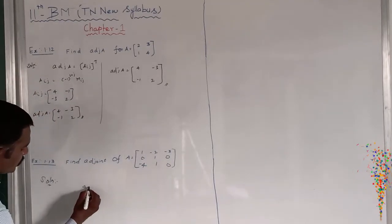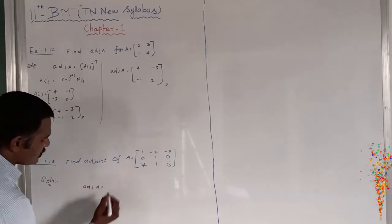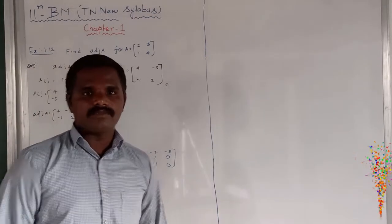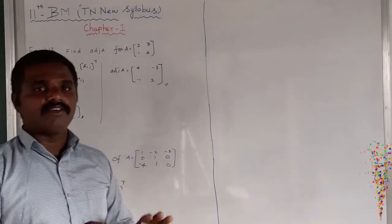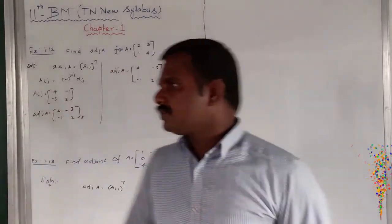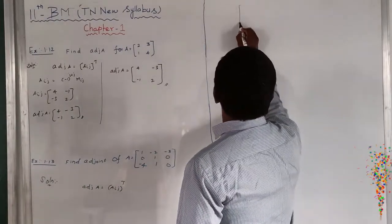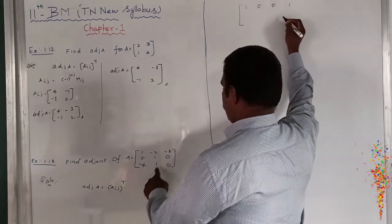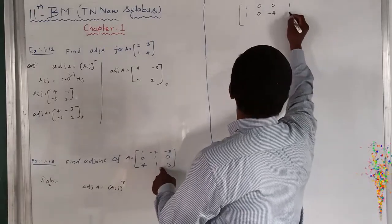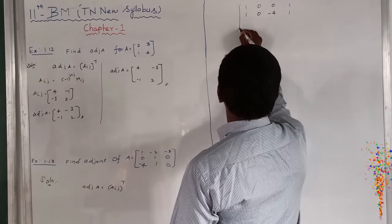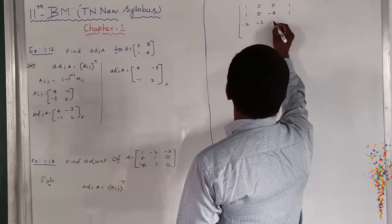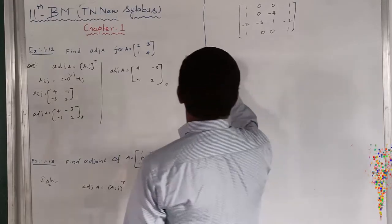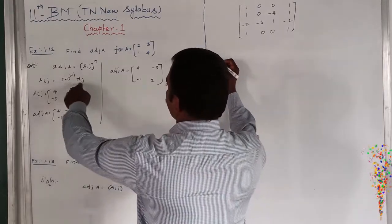Adjoint of A equals Aij the whole transpose. How can we find Aij using the shortest way, without finding the minor? I will explain. Starting from the sub-matrices used: [1, 0; 0, 1], then [1, 0; minus 4, 1], and [minus 2, minus 3; 1, minus 2] and [1, 0; 0, 1]. So Aij the whole transpose equals these computed values.